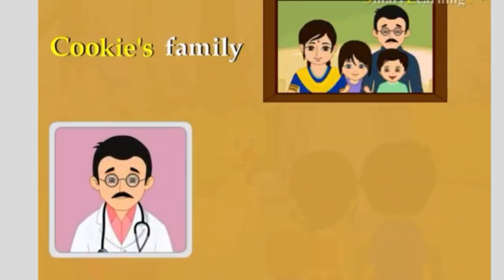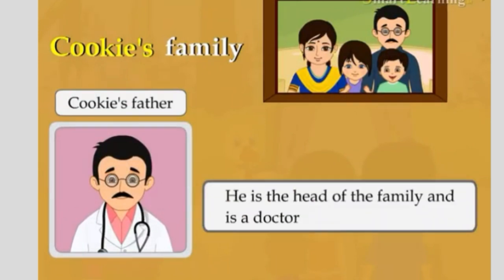This man is Cookie's father. He is the head of the family and is a doctor. His name is Mr. John Smith.